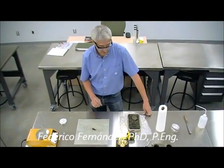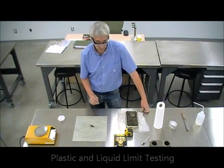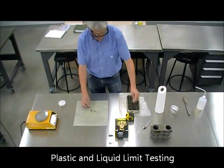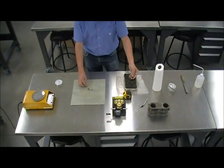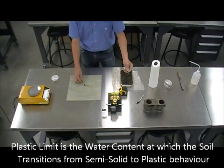There are two tests that we do to determine the plastic and the liquid limit. We will start with the plastic limit. The plastic limit is the state of moisture in a soil that separates plastic behavior from solid behavior.